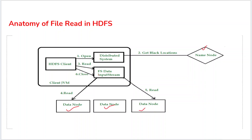I send a read request to the FSDataInputStream. The FSDataInputStream is responsible for handling all reading and writing to the data nodes. This entire process is done in the client JVM (Client Java Virtual Machine). When the read method is initiated, it automatically fetches the block locations from the name node and fetches all the information from the data nodes. If the file is not at the first node, it will try the next node, and so on, until it reads the file.